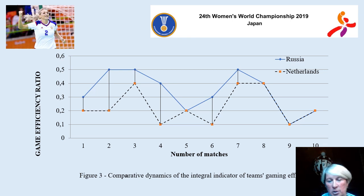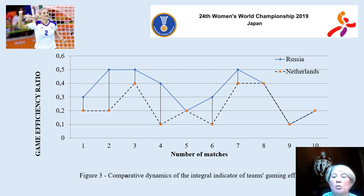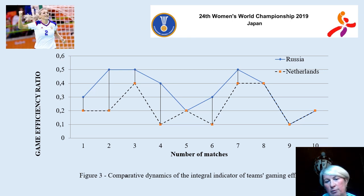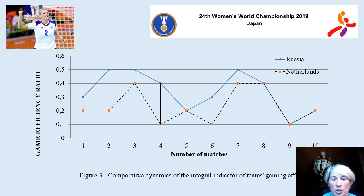Analyzing this indicator gives us understanding of which player positions we have problems with and what needs to be addressed in the training process. Because we lost against the team of Netherlands, we decided to make a comparative analysis of the same indicators for both teams, as shown in this picture.